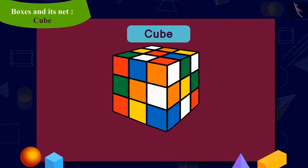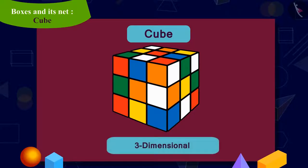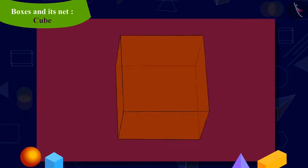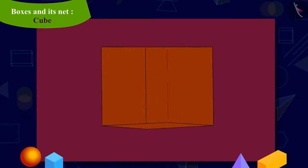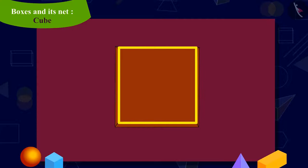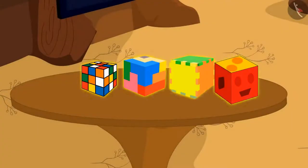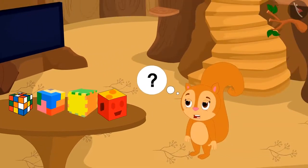A cube is a three-dimensional shape in which all the faces are square. Chanda wants to put these gifts in a box and give it to Appu, but she does not have any box of this shape.